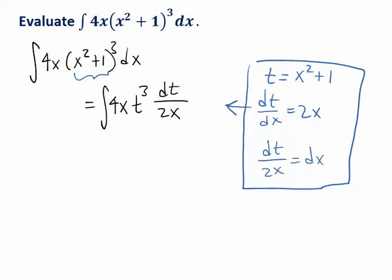And now you can see what I was talking about a moment ago. This 2x and this 4x can cancel out and simplify, leaving you with just a 2. And now we have to compute the antiderivative of 2t cubed dt. And that's easier.